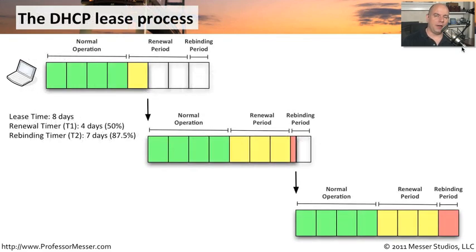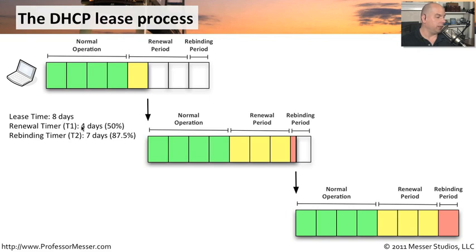Here's graphically how this lease process might look. Let's assume we've received an IP address and our lease time is 8 days. Doing the timer calculations, after four days our T1 timer will expire — that's the green timer here. And the yellow T2 timer is at 7 days, which is 7/8ths of the time frame, or 87.5%. So we get our IP address and normal operation continues through days 1, 2, 3, and 4.